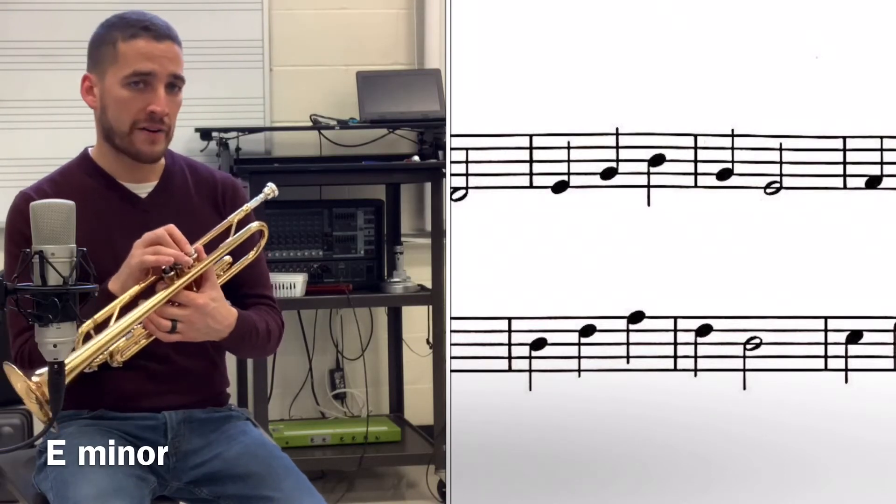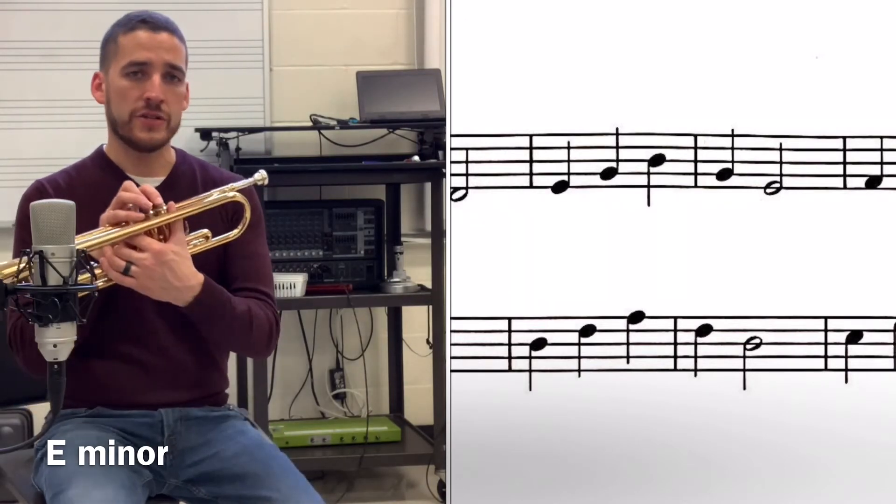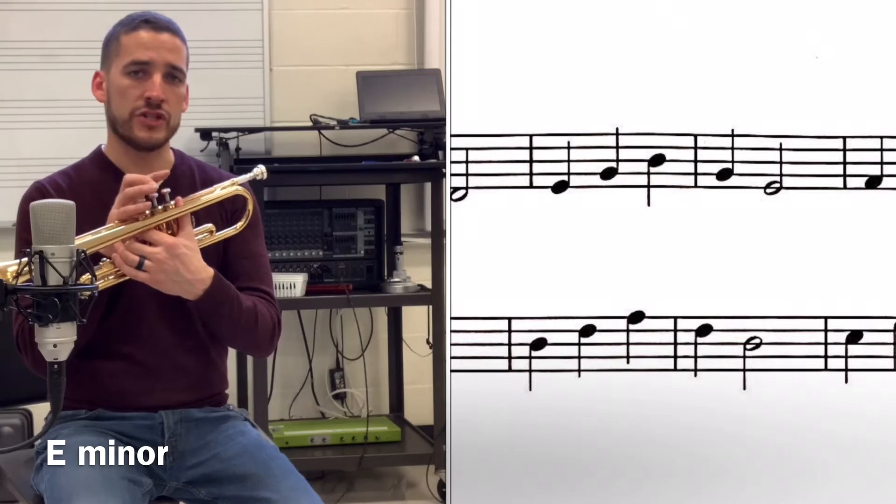Moving up to the next one, we have E. This is our third, it's another minor arpeggio, so we have E, G, B, G, E.